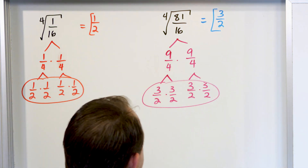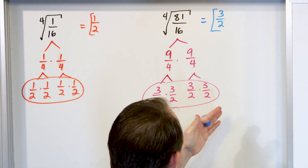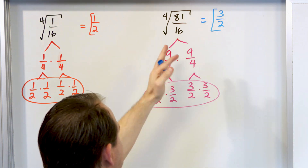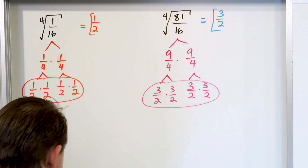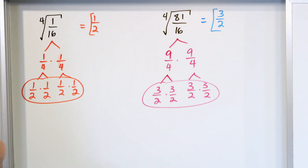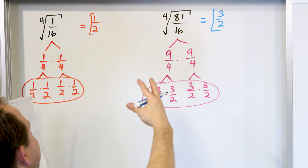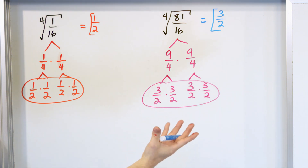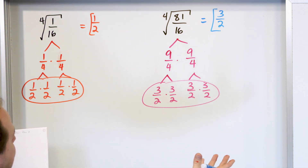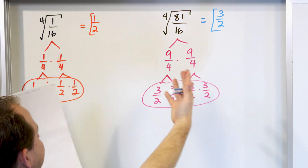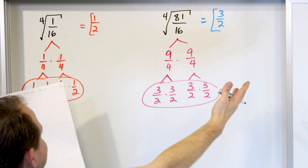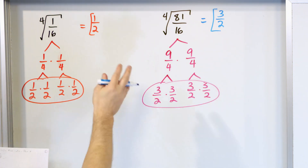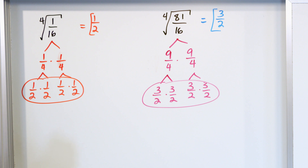Again, if you take 3/2 times itself four times, you recover what's underneath. So far these have been perfect — perfect fourths, if you want to call it that — because the answer was a nice numerator and nice denominator.